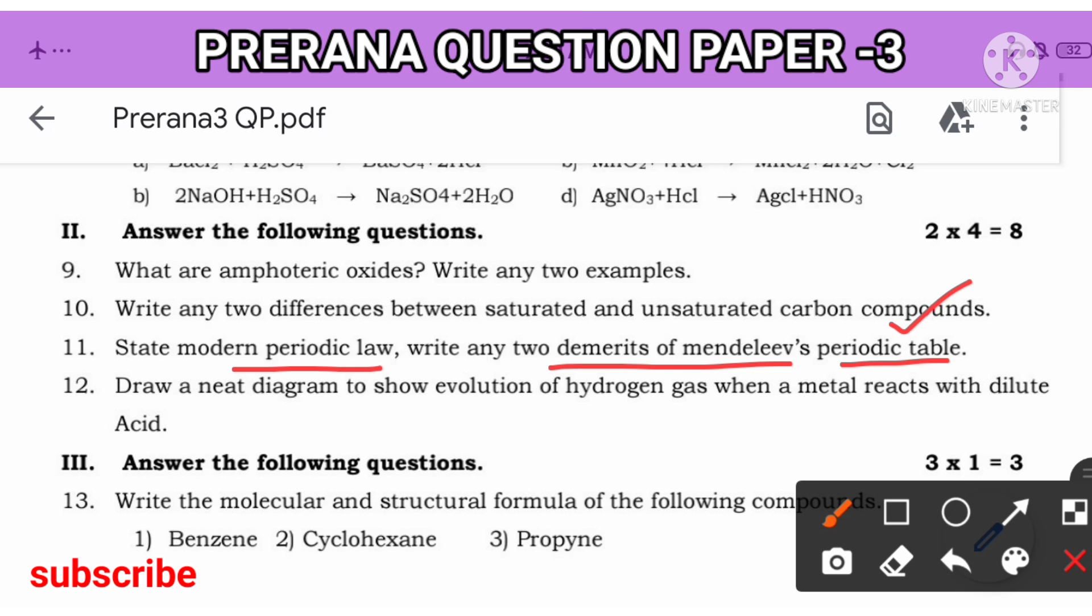Next, draw a diagram to show the evolution of hydrogen gas when metal react with dilute sulfuric acid. This question is not directly there, but this is an example for reaction of zinc with the dilute sulfuric acid. So, evolution of hydrogen gas, metal react with acid. You want to understand, it is the question for reaction of the zinc with the dilute sulfuric acid. You should write this.